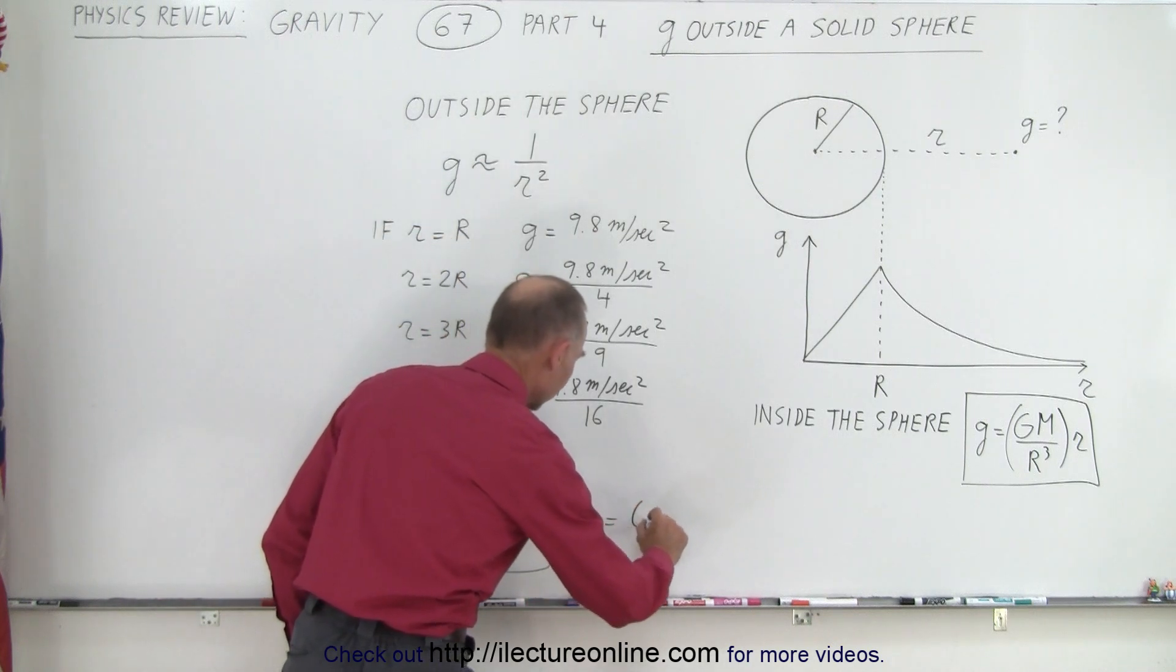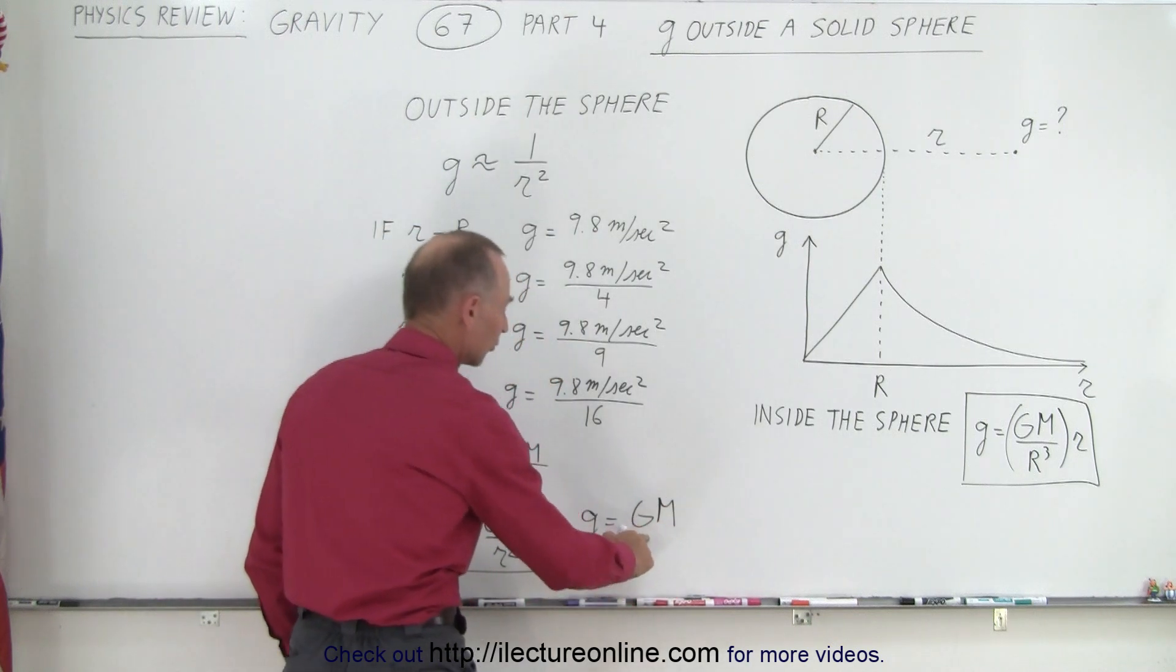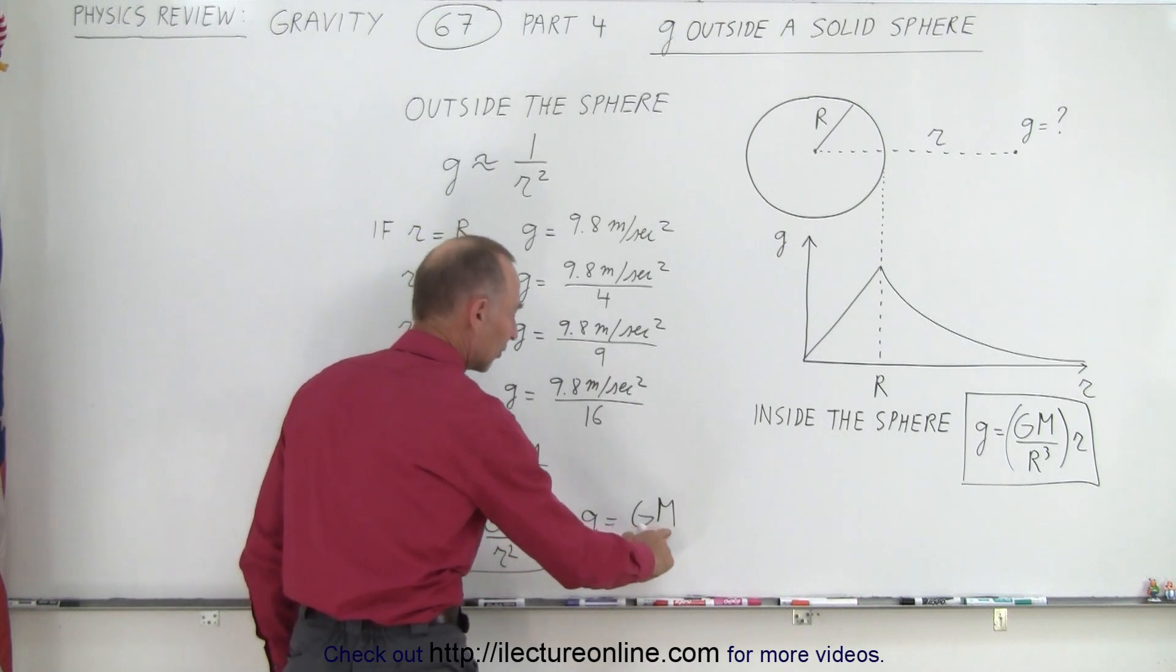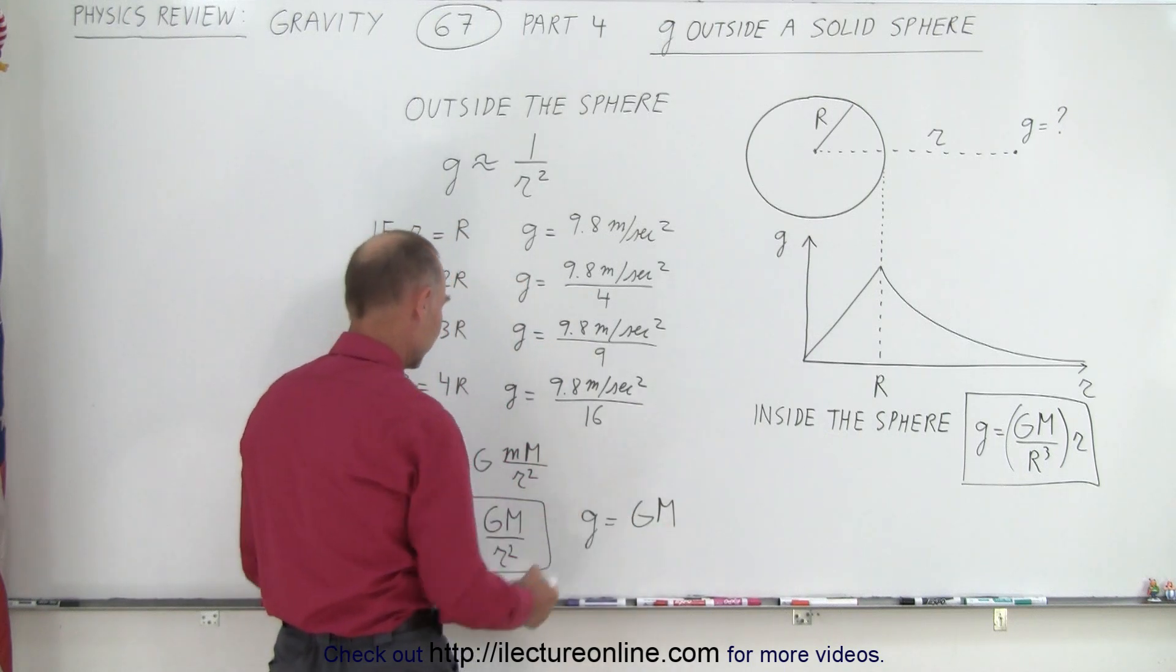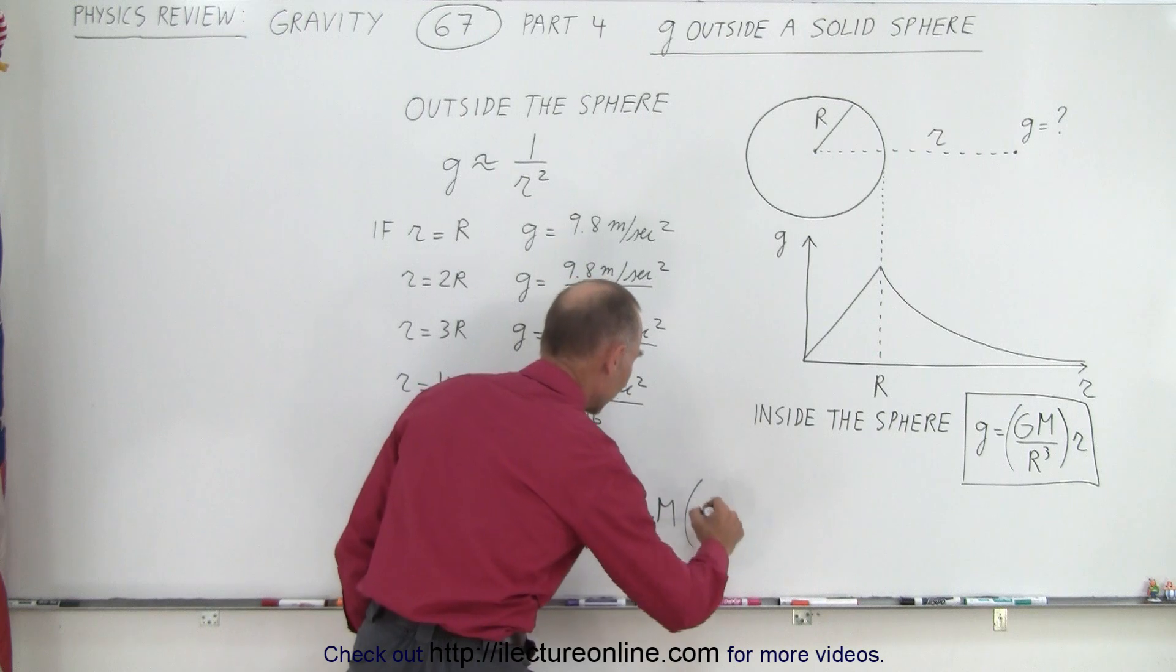You can say g is equal to g times m, the universal gravitational constant, times the mass of the object, the Earth, the Moon, whatever it is, times 1 over r squared.